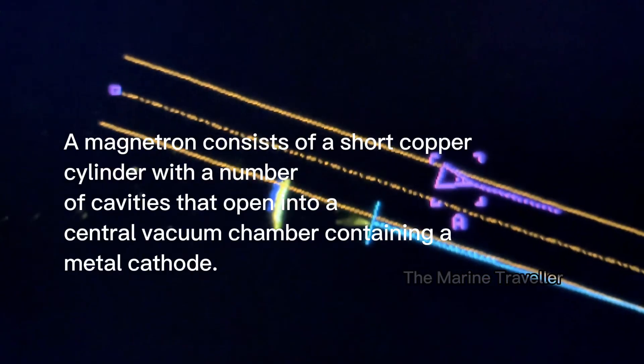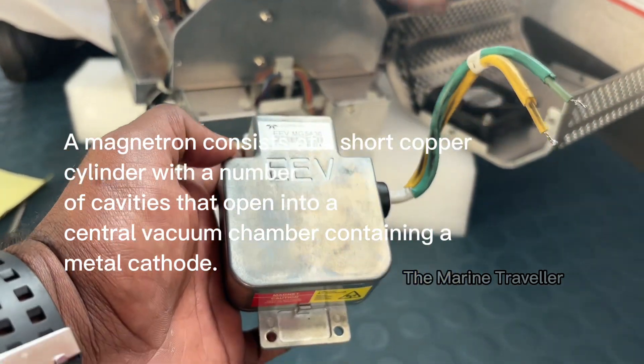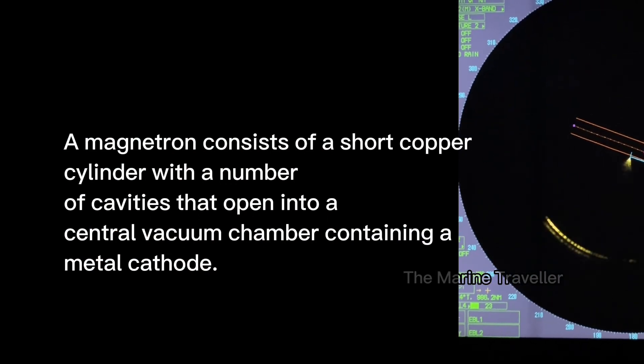A magnetron consists of a short copper cylinder with a number of cavities that open into a central vacuum chamber containing a metal cathode.